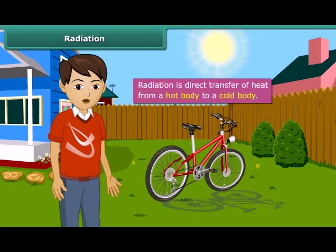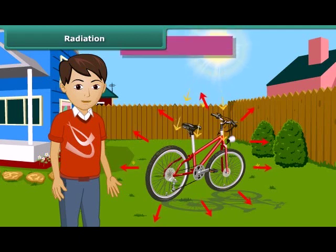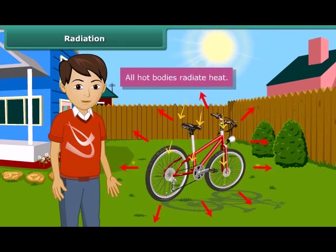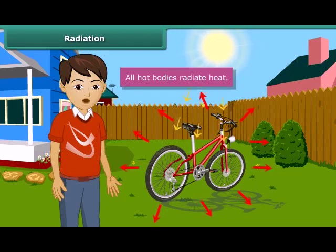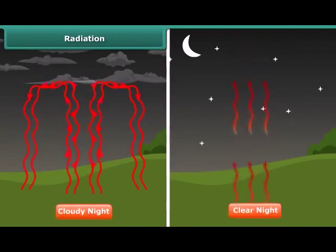There is a third way by which heat can be transferred from a hot body to a cooler one. This mode of transfer is called radiation and it does not need any medium between the two bodies. All hot bodies radiate heat rays to the surroundings. Heat from the sun comes to us by radiation, travelling through millions of kilometers of space to reach the earth. When this heat falls on some object, a part of it is reflected, a part is absorbed and a part may be transmitted. The temperature of the object increases due to the absorbed part. A cloudy night is hotter than a clear night because thermal radiations are reflected back to the earth by clouds, making one feel warmer.